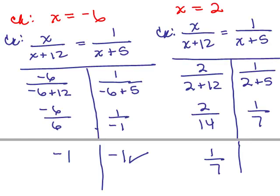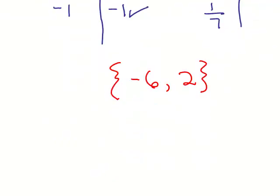On another video, we actually did the same problem using another method, and this is how we checked both of them. So you can see the steps if you were going to check it. So both of them checked, and that's why the solutions really were negative 6 and 2.